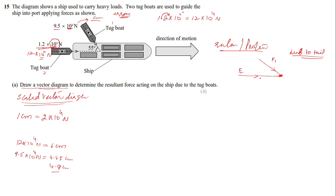In the scale vector diagram, the head of F1 is joined to the tail of F2. To draw it: first draw a horizontal reference line. Then draw F1 — a 4.8 cm arrow at 55 degrees to the horizontal. The direction must match the original diagram exactly; you cannot change the angle.